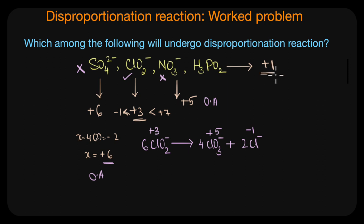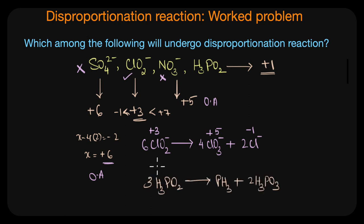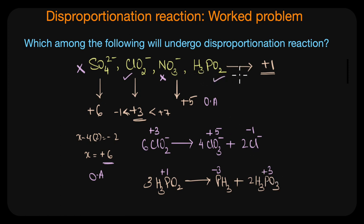The last species is H3PO2. The oxidation state of phosphorus in H3PO2 is plus one, which is an intermediate oxidation state for phosphorus. H3PO2 can easily undergo disproportionation where phosphorus changes from plus one to plus three, as well as from plus one to minus three. In the disproportionation reaction, phosphorus in plus one oxidation state changes to minus three in phosphine and plus three in phosphorous acid.